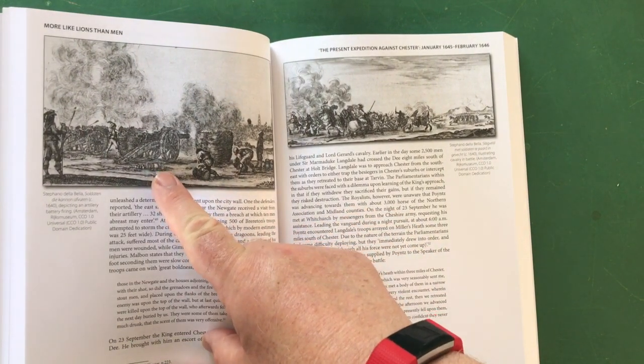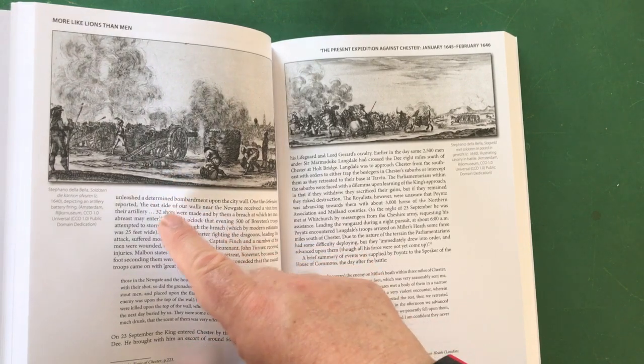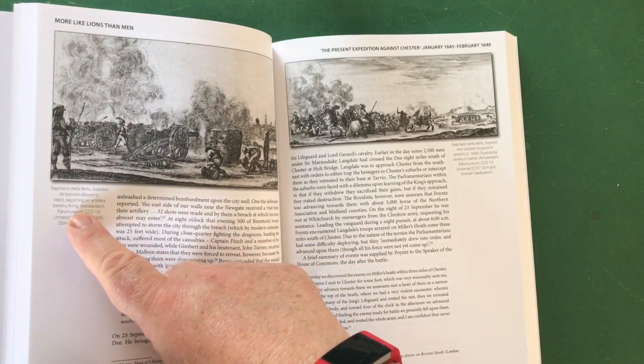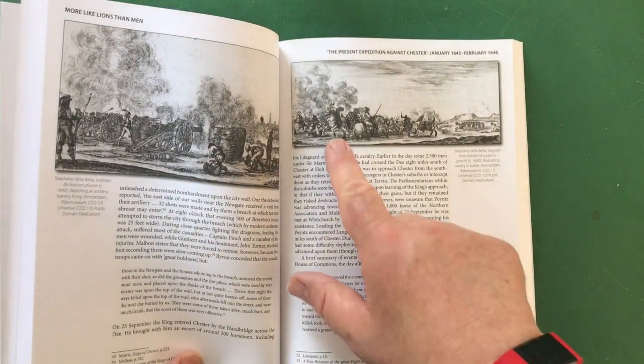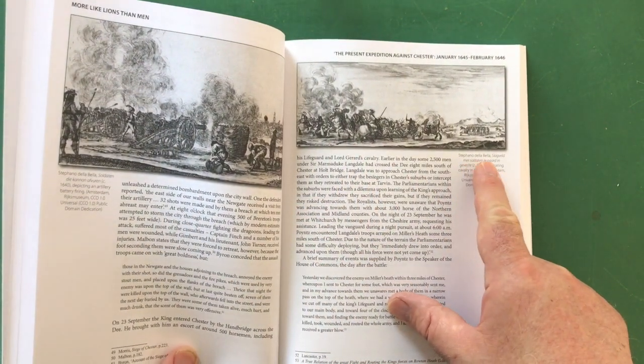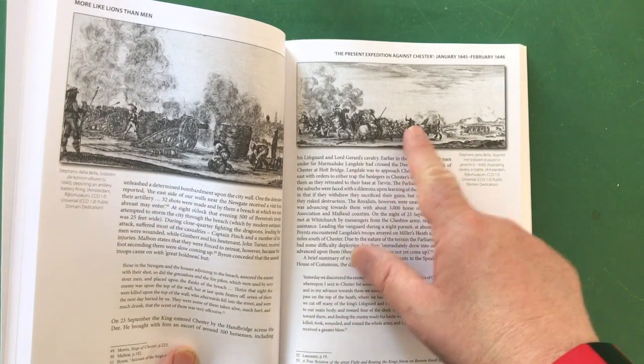There's a couple of lovely engravings here, not from British sources actually. This one here is Stefano della Bella - 'Soldaten und Kanonen' - depicting an artillery battery firing, and that's from Amsterdam. Here's another one, Stefano della Bella, 'Schlachtfeld mit Soldaten' - a cavalry battle, very nicely atmospheric.